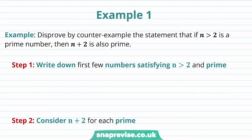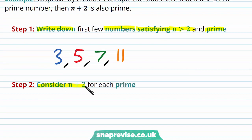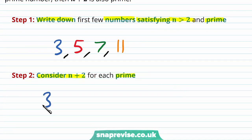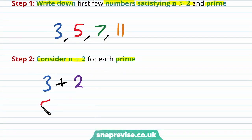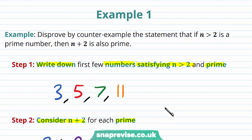Our first example asks us to disprove by counterexample the statement that if n is strictly greater than 2 and is a prime number, then n plus 2 is also prime. Our first step is to write down the first few numbers satisfying n greater than 2 and being prime: 3, 5, 7, and 11. Our second step is to consider n plus 2 for each of these prime numbers: 3 plus 2, 5 plus 2, 7 plus 2, and 11 plus 2. Our statement tells us that n plus 2 should be prime, but we're looking to disprove this.